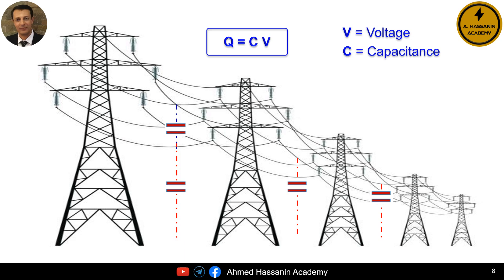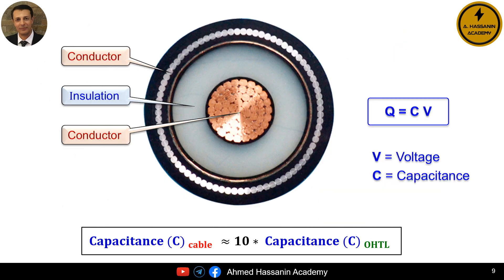Are the self-capacitances present only in overhead lines? Certainly not, because underground cables are also used for electrical power transmission. The cable also acts as a capacitor and therefore the cable can store electric charge in the insulating medium. Also, Q equals C times V. However, the value of capacitance C also depends on the type of insulating material. This means that if the insulating material is air, the value of capacitance will be different than if the insulating material is XLPE, as in the case of underground cables. Therefore, the value of capacitance C in cables is about 10 times greater than the value of capacitance C in overhead lines.